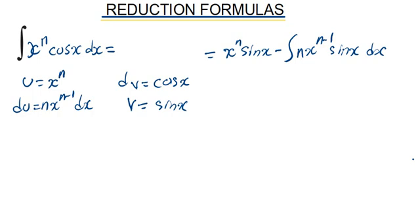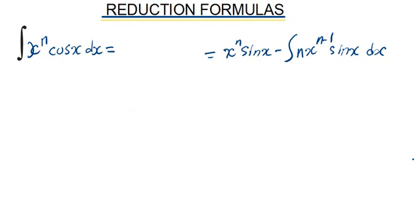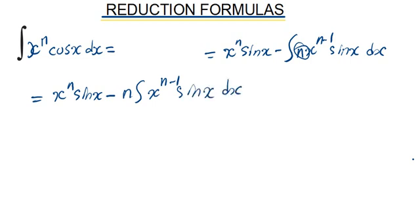So what are we able to do with that? Reaching this stage, we can bring out the coefficient, which is our n in this case. So we're going to have x to the power n sine x minus n integral of x to the power n minus 1 sine x dx. We are able to work with it the way it is, but maybe we can also do something else. We can still integrate this part by parts again.